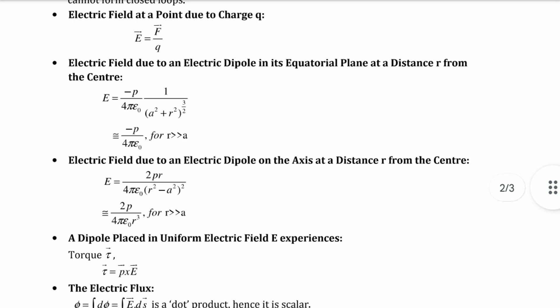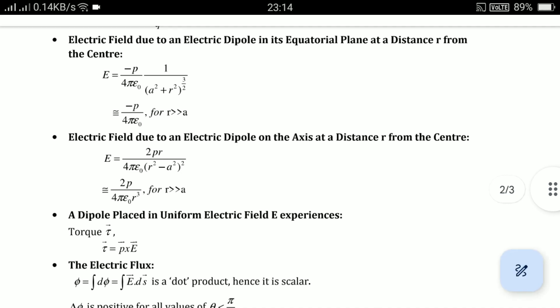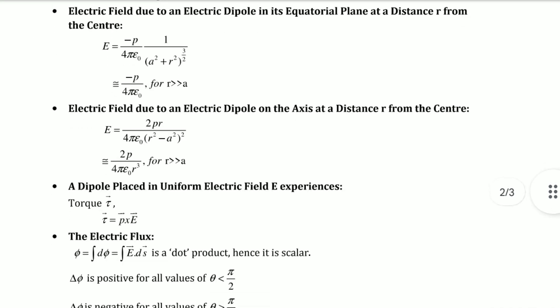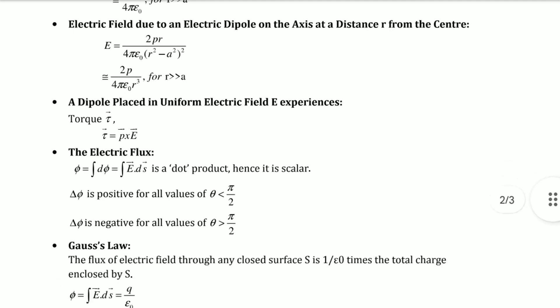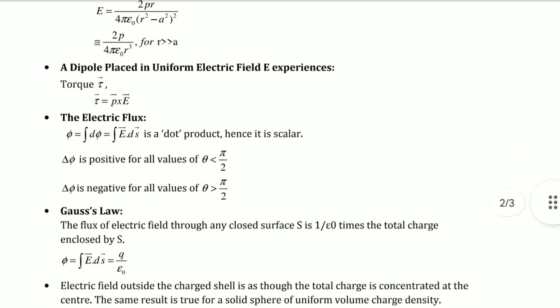Electric field due to an electric dipole in the equatorial plane: E = -p/(4πε₀) × 1/(a² + r²)^(3/2) for r >> a. Electric field due to electric dipole on the axis at distance r from center: E = 2pr/(4πε₀(r² - a²)²) for r >> a.